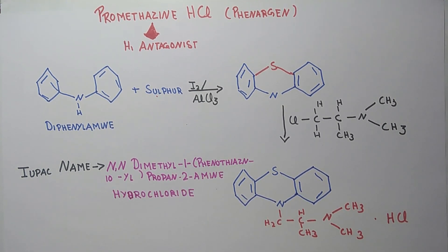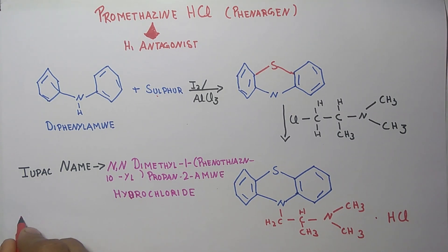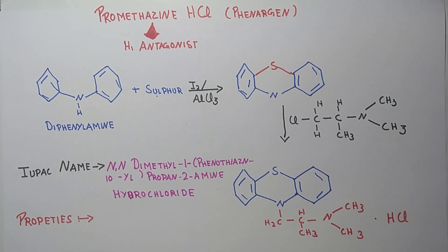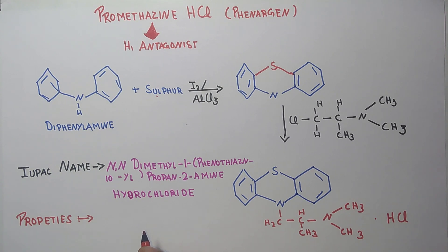Now we will talk about its properties. It is a faintly yellowish crystalline powder, highly soluble in water, soluble in alcohol and in methylene chloride.